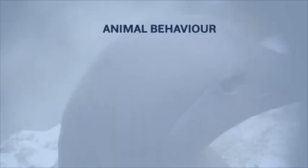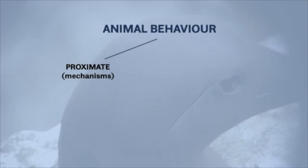We can ask two fundamental questions about animal behaviour. They're referred to as proximate and ultimate. Proximate questions are those concerned with the mechanisms that bring about behaviour. Ultimate questions are those concerned with the evolution of behaviour.